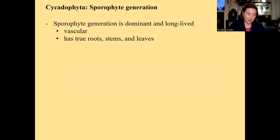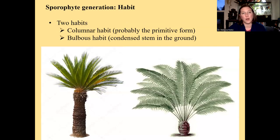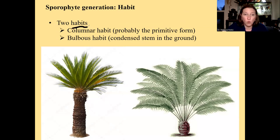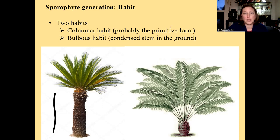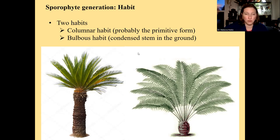We are in the vascular plants and the seed plants, so we know the sporophyte generation is dominant, vascular, and has true roots, stems, and leaves. Cycads grow in two different types of form depending on the species — we call this 'habit,' meaning form or shape. Cycads can grow in a columnar habit, where the trunk is long and kind of skinny, or in a bulbous habit, where the trunk is round and short. The columnar habit is thought to be the more primitive form in evolutionary terms.